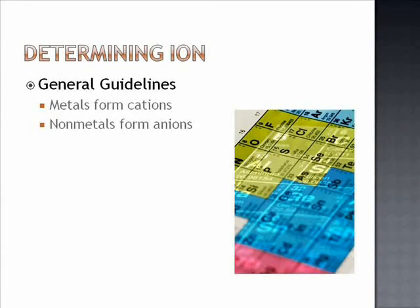Determining ions. In order to determine whether an atom will form anions or cations, you first observe what classification of element it is. Metals have a strong tendency to form cations due to their low ionization energies, electron affinities, and electronegativities.